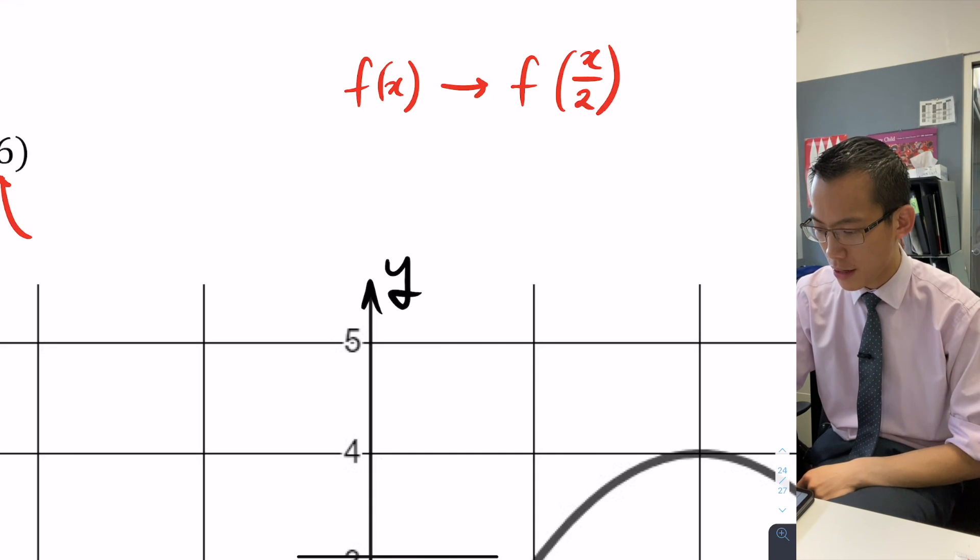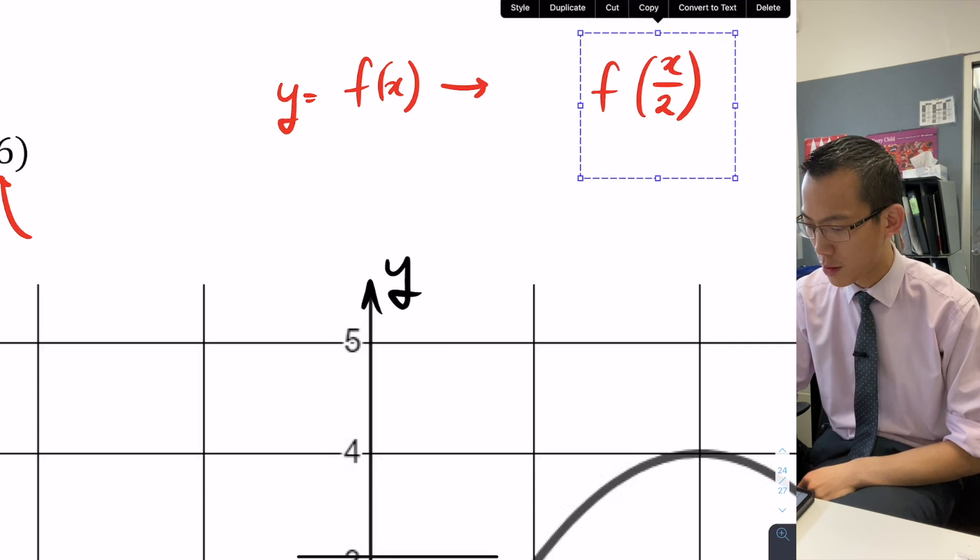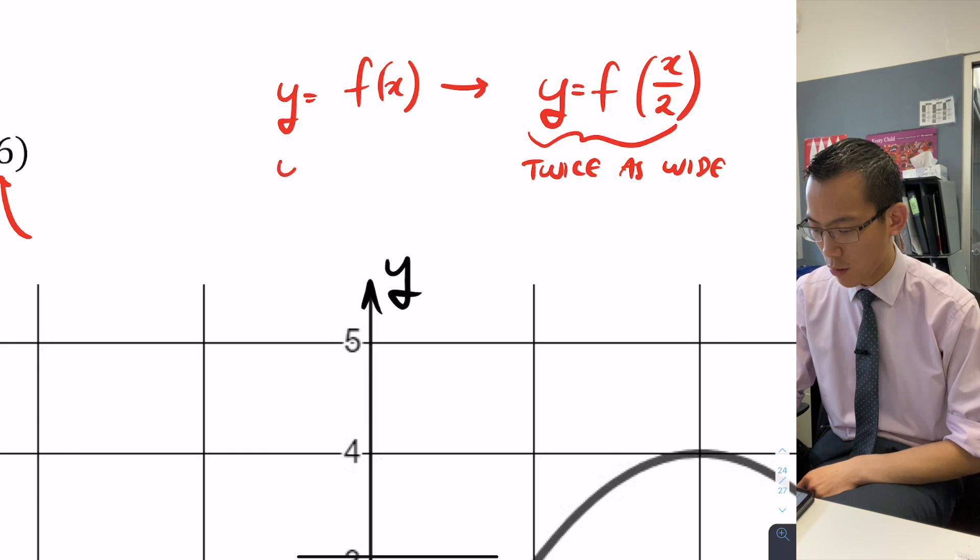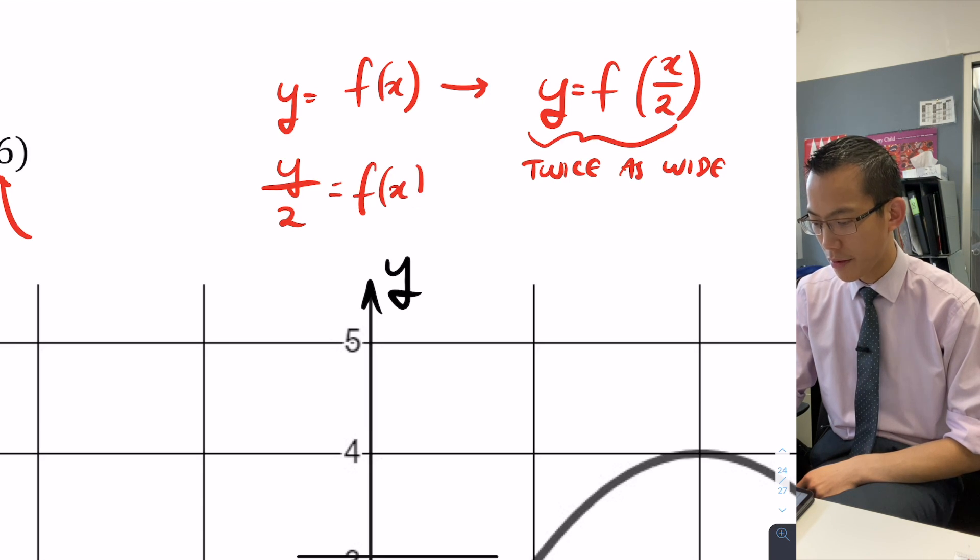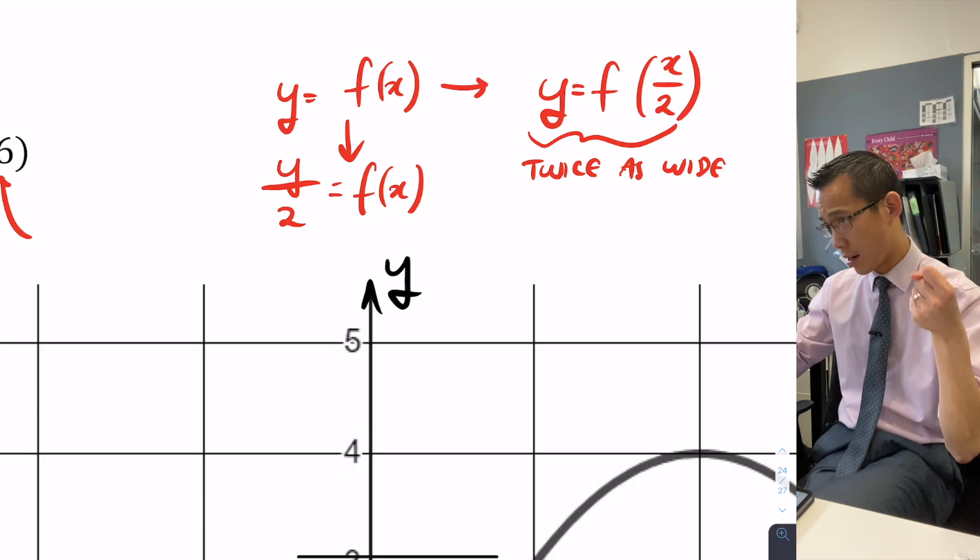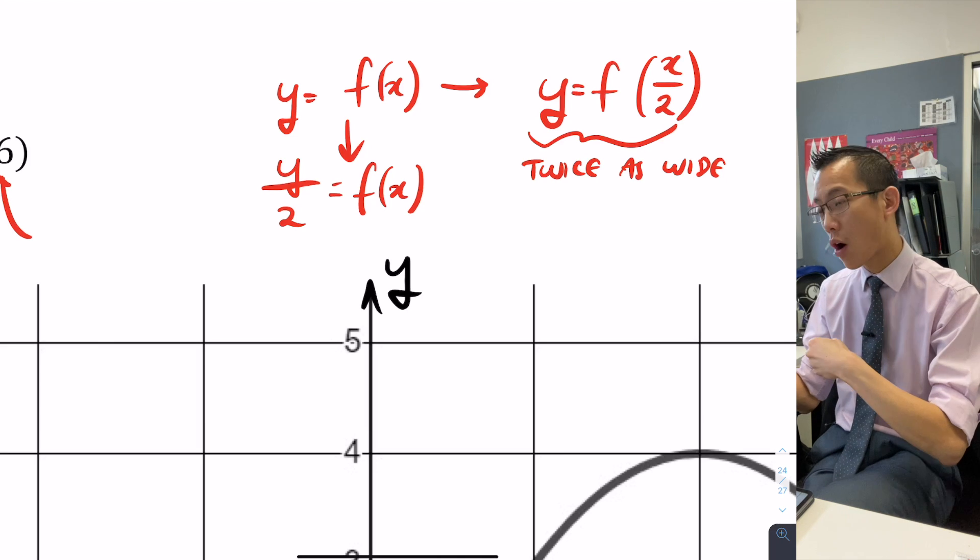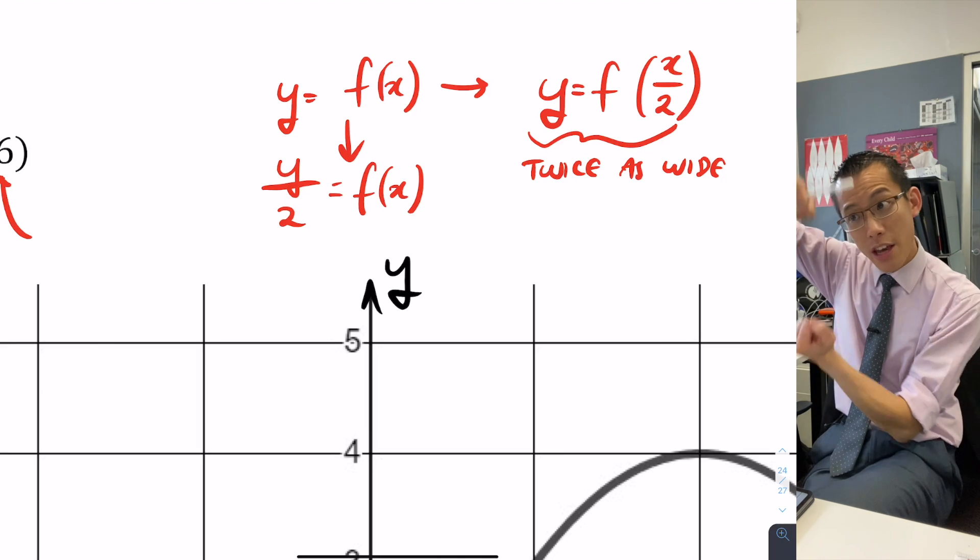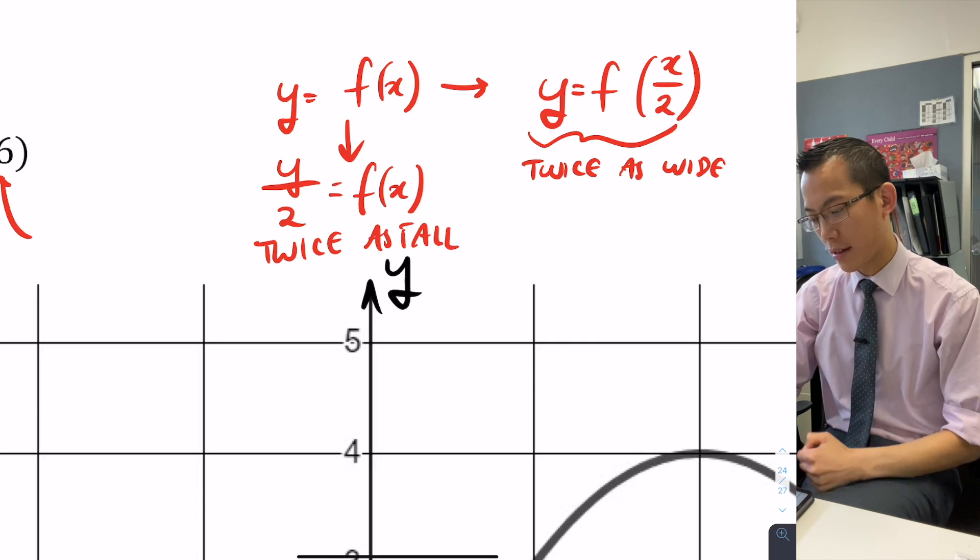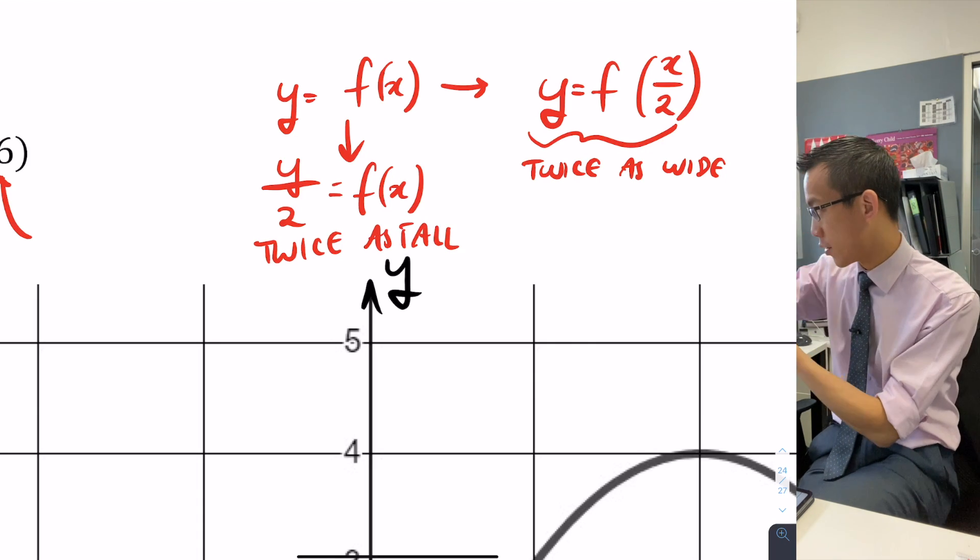By contrast, say that was y equals f like that. This guy is twice as wide. Now if I said, instead of x on 2, if I said y on 2, this is another dilation because it's a multiplication or division, but it's not going to be wider because I'm not changing x anymore. I'm changing y. So instead of being bigger this way, you're going to stretch vertically. Exactly right. I guess you'd say it's twice as tall.